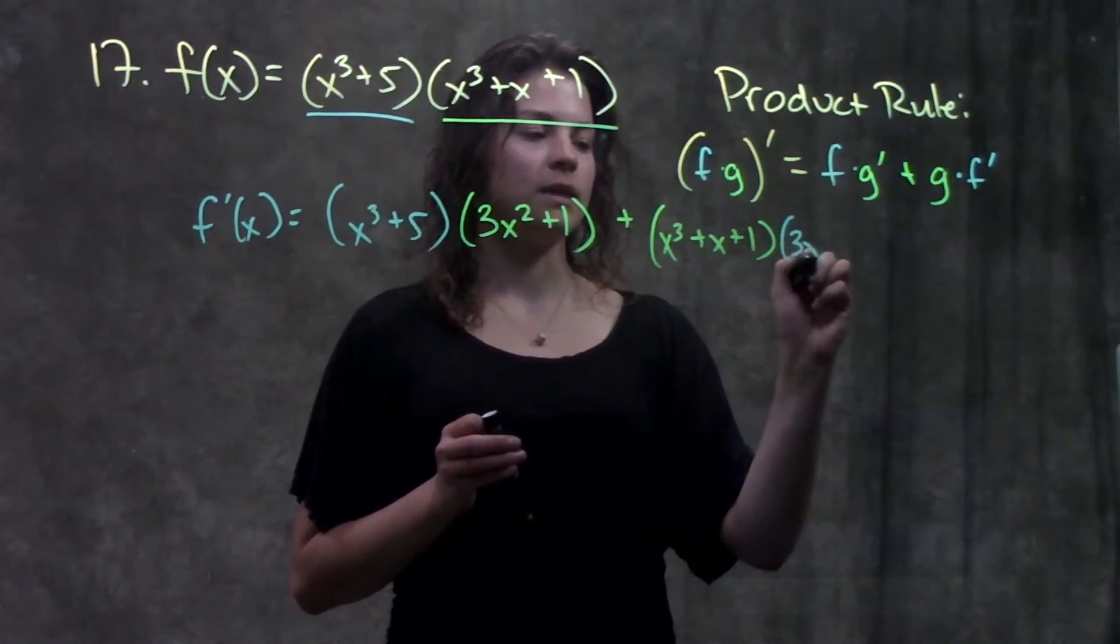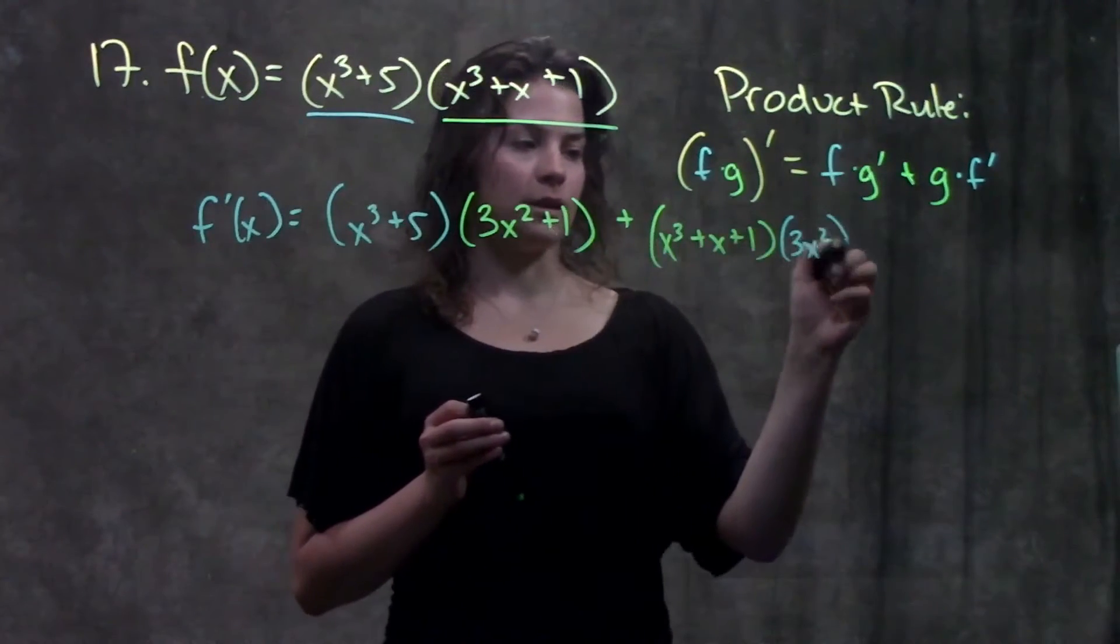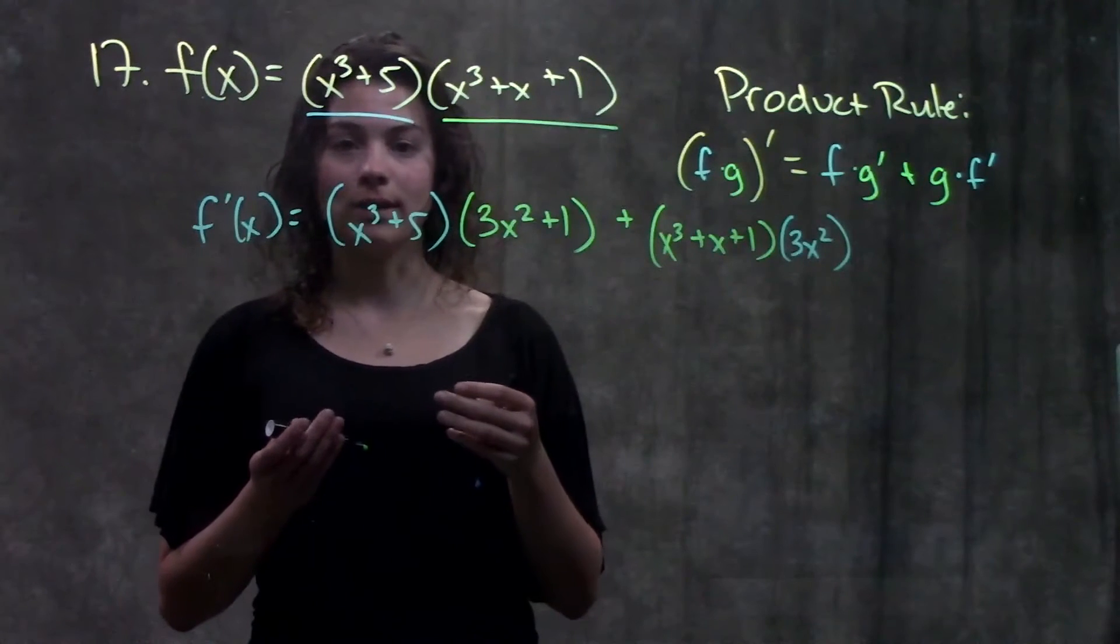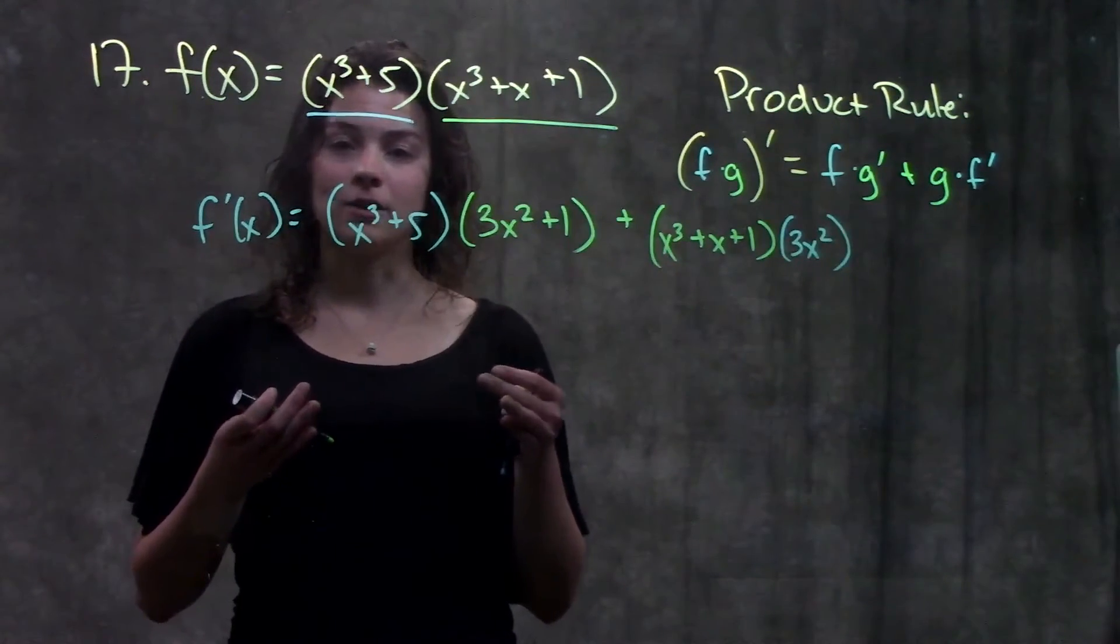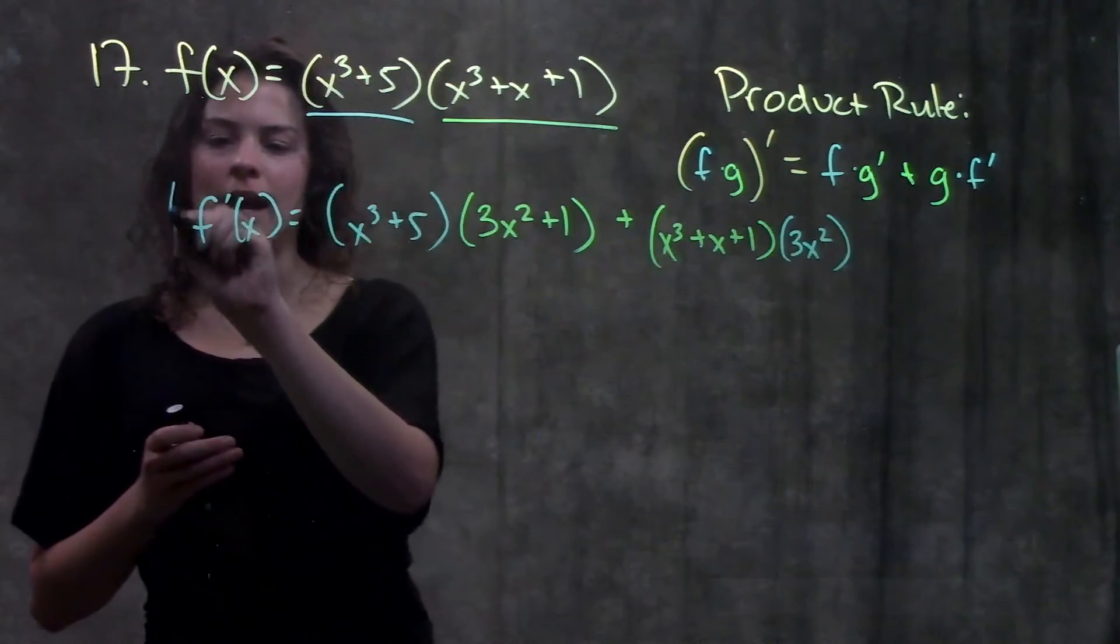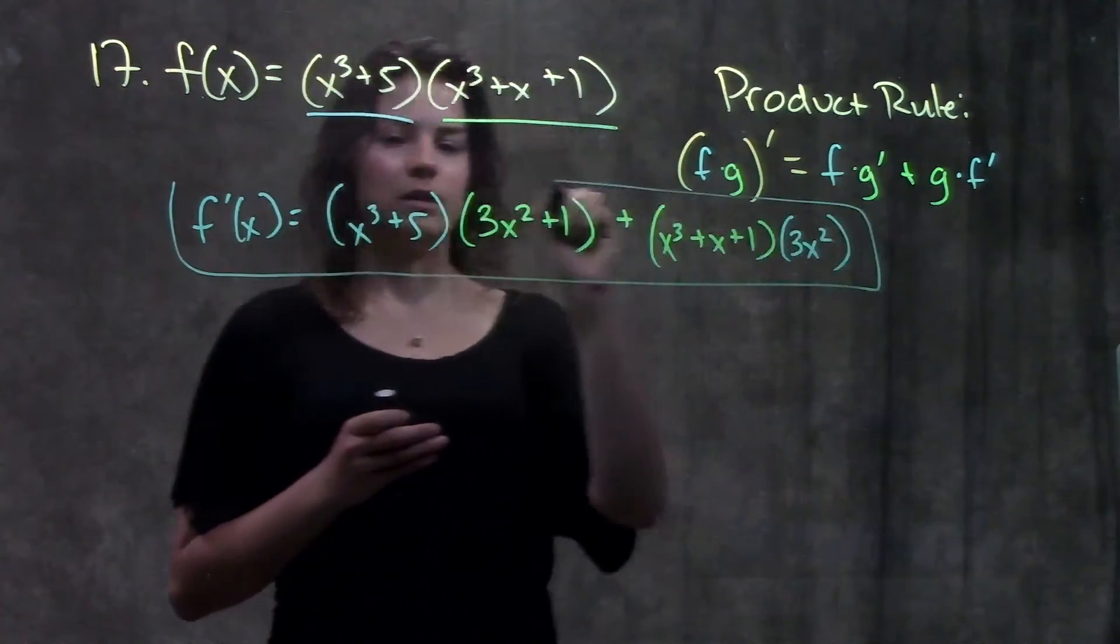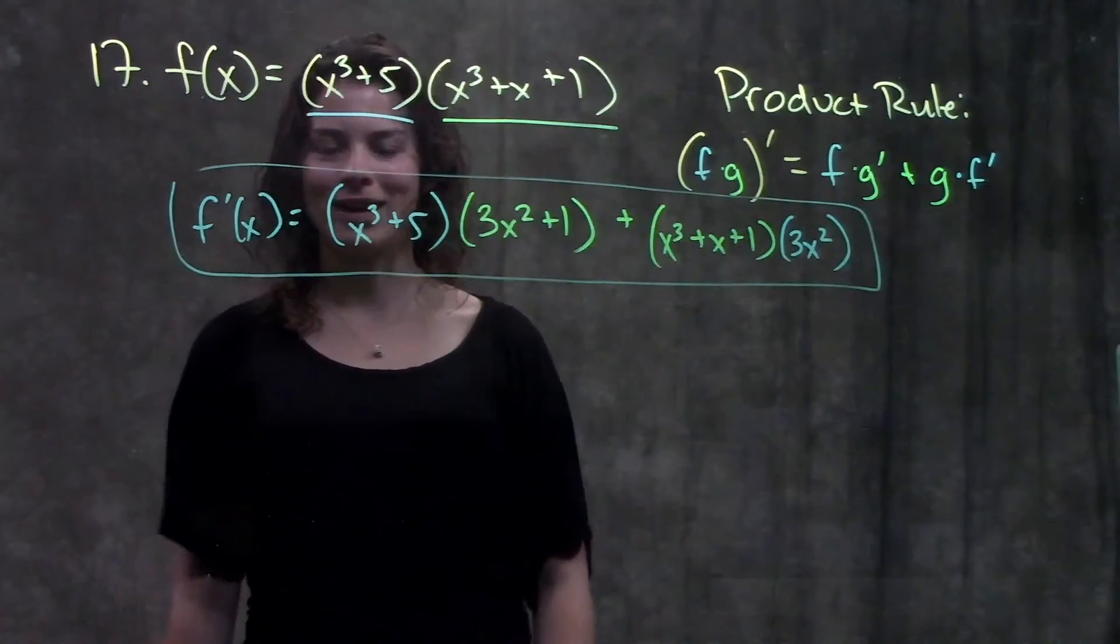And using power rule again, this becomes 3x squared plus 0 because derivative of a constant is always 0. And from here, I can multiply these things out and add my like terms. But for this video, I'm just going to leave it like this and say the derivative of my function is equal to this whole quantity here. And that's it.